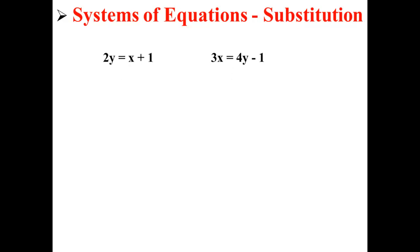Next, let's try to solve using substitution. Here, we have our two original equations: 2y equals x plus 1 and 3x is equal to 4y minus 1. Let's solve the first equation for x. Now, we have x is equal to 2y minus 1.